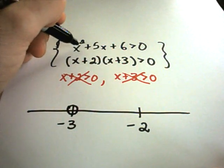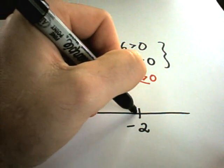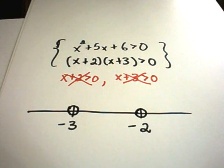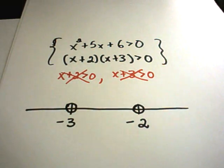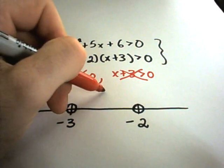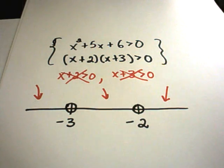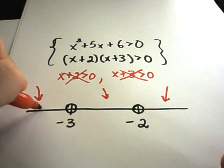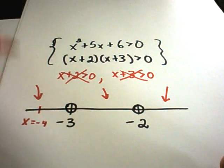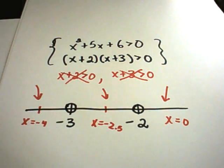Likewise, if you plug -2 back into your inequality, you also get 0 on the left side, and 0 is not greater than 0, so again we put an open circle. Now you have to take a number from each interval: numbers less than -3, numbers between -3 and -2, and numbers greater than -2. We'll use x = -4, x = -2.5, and x = 0.